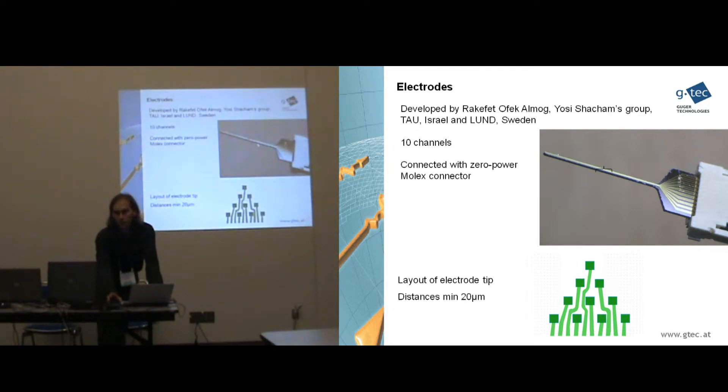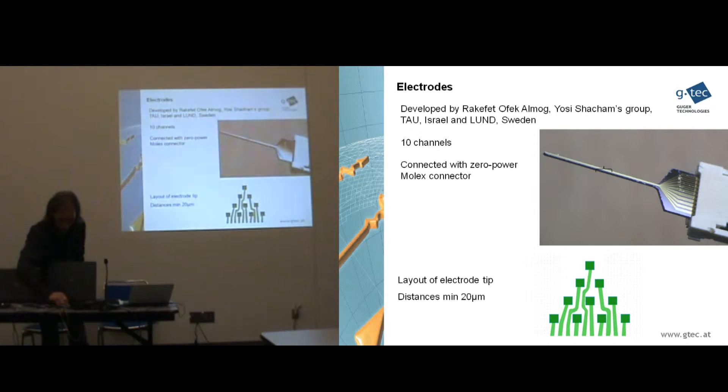Here is a picture of a silicon electrode produced by Yossi Shahram from Tel Aviv University and Lund University. It's a 10 channel electrode. So the electrode pins are on the tip of this electrode. And you can see the layout here. And the inter-electrode distance in this case is only 20 micrometers. So it's very small. It can also easily break down. So yesterday somebody was already taking one of these electrodes. But I pass it also around and have a look.